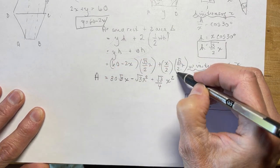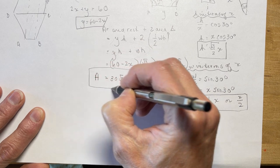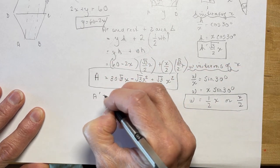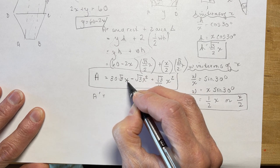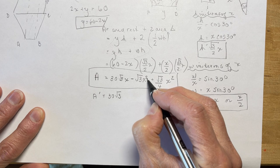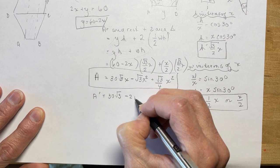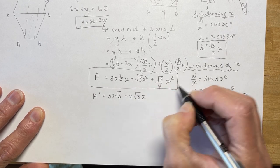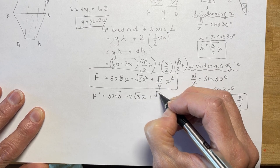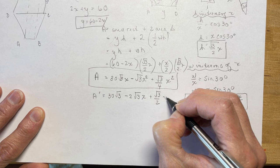It's all set for me to take the derivative and I'll do that right now. So A prime is going to be 30 root 3. This one is going to be minus 2 root 3x, and 2 times this, the 2 will divide into the 4, that's going to give me root 3 over 2x.